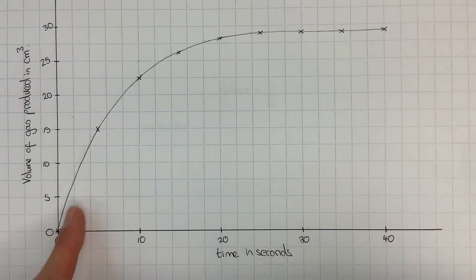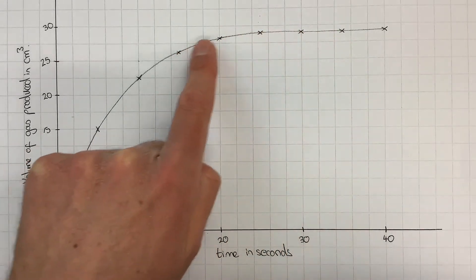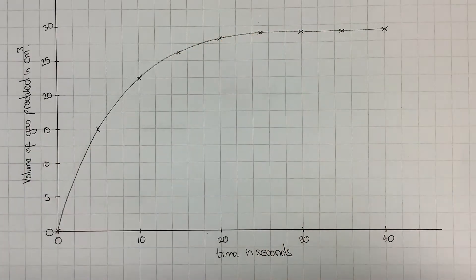It starts off steep, which means there would be a high rate of reaction, and it finishes with a very low rate of reaction as the gradient gets smaller.